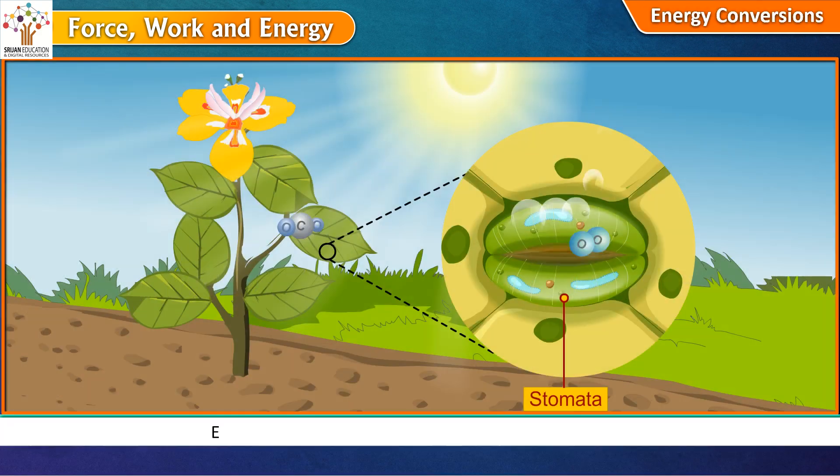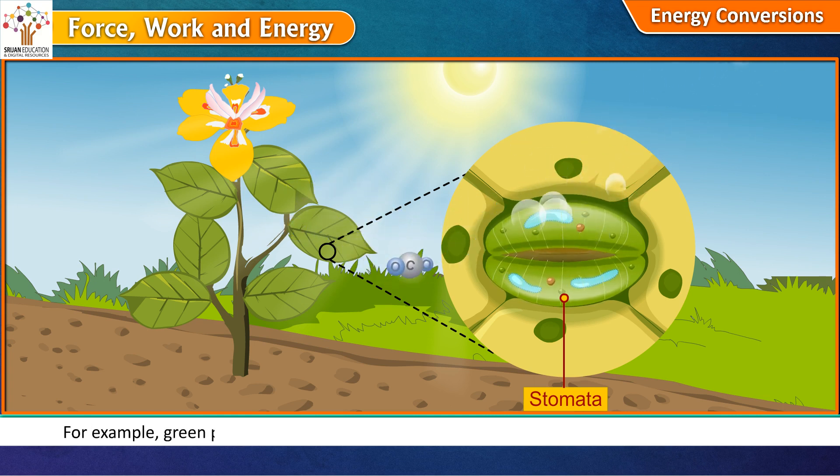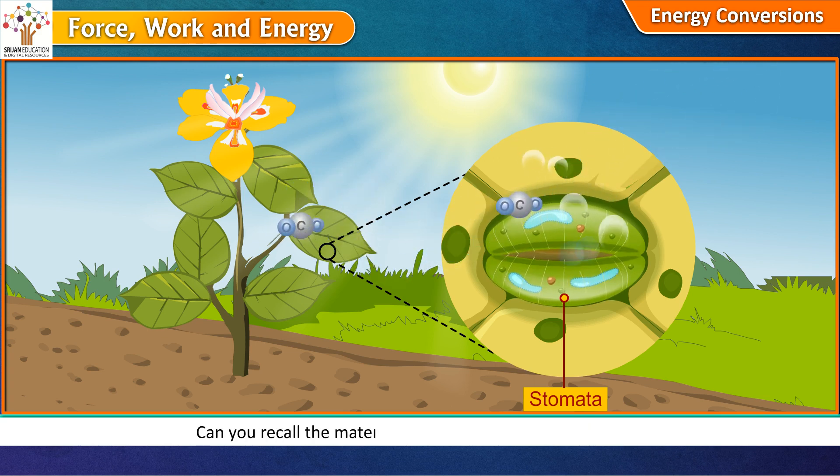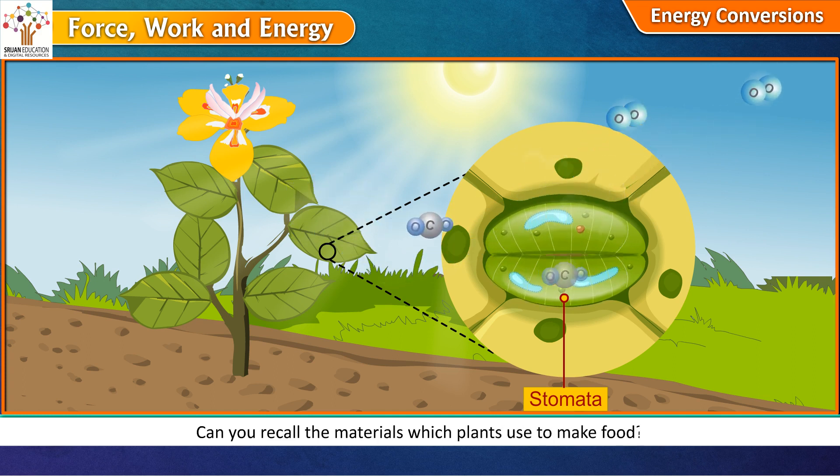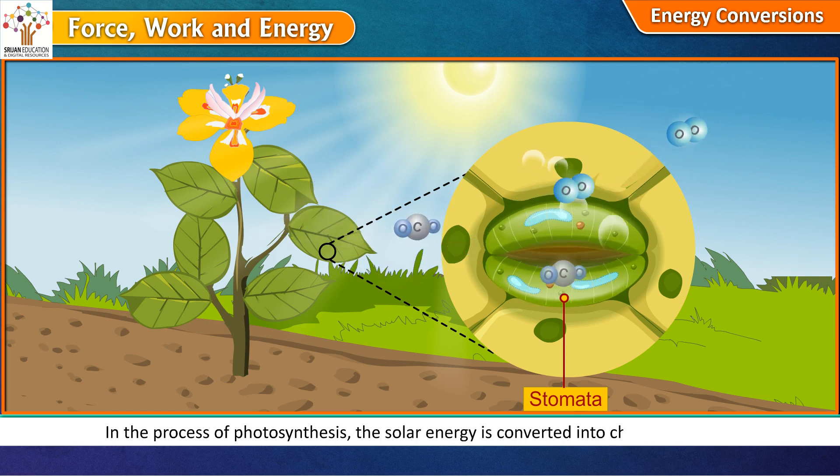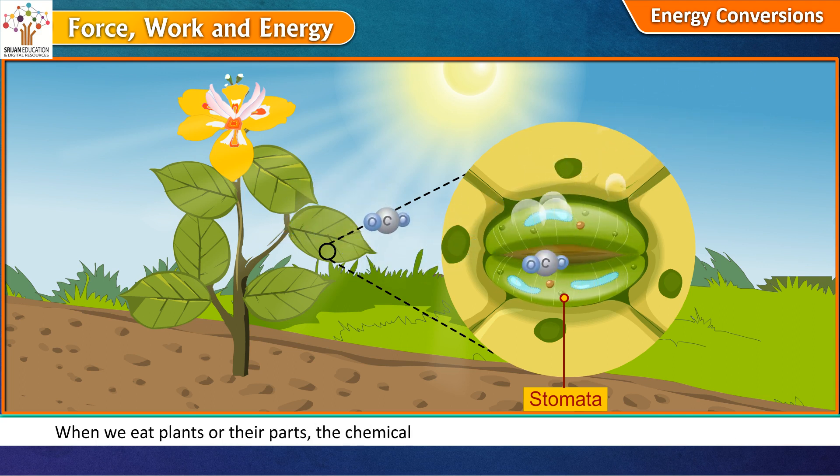Energy conversions. Energy can be easily changed from one form to another. For example, green plants make their food by trapping the energy of the sun by photosynthesis. Can you recall the materials which plants use to make food? In the process of photosynthesis, the solar energy is converted into chemical energy. When we eat plants or their parts, the chemical energy of food is converted into muscular energy.